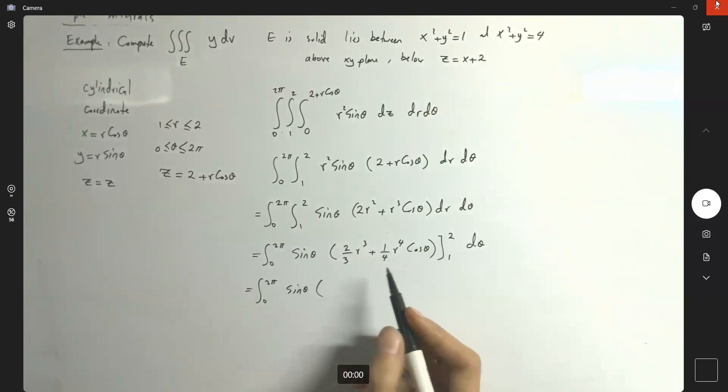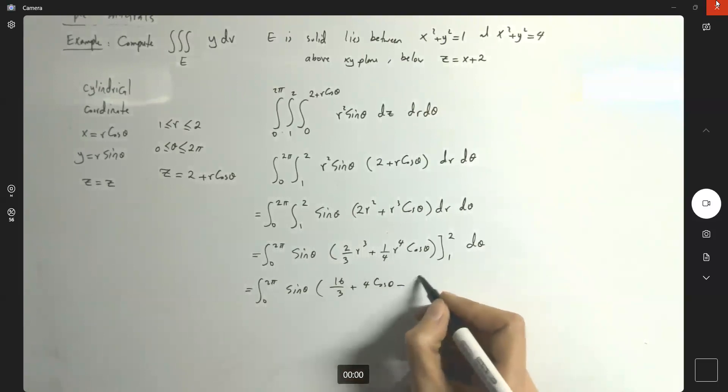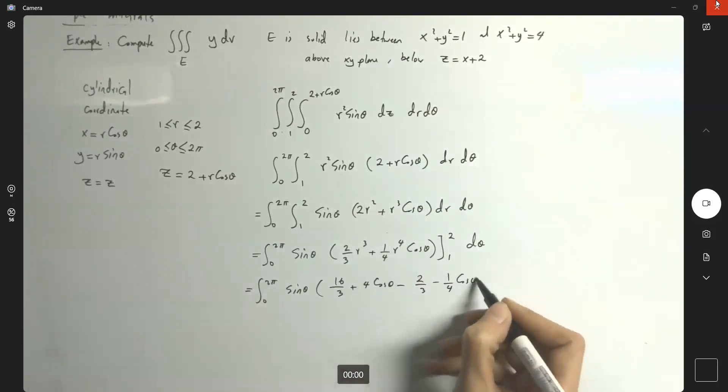So this guy is integral 0 to 2 pi sine theta. And if you plug in 2, you get 16 divided by 3 plus 16 over 4 or 4 cosine theta minus if I plug in 1, I get 2 thirds. If I plug in 1, negative 1 fourth cosine theta d theta.